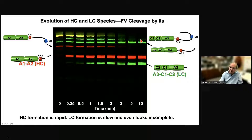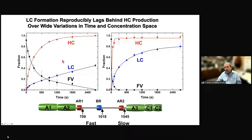We were concerned that we were being fooled by the conditions we picked, so we varied enzyme, substrate, and time. Two examples shown here give the same result: Factor V goes away, the heavy chain comes up right away, the light chain comes up very slowly. From this, we conclude that the two cleavages giving the mature heavy chain are fast, whereas the cleavage giving the mature light chain — just C-terminus to acidic region 2 — is very slow.